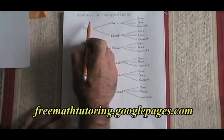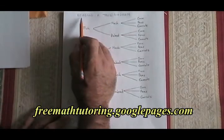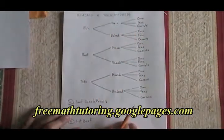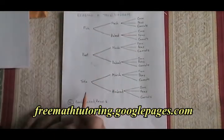This video teaches how to read a tree diagram. This is a tree diagram. It represents the choices that might be made in a cafeteria by a student who has to choose a main dish: fish, beef, or tofu.